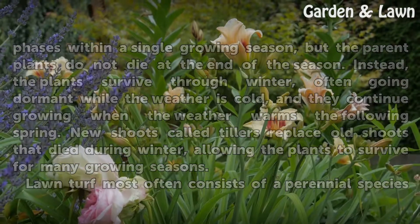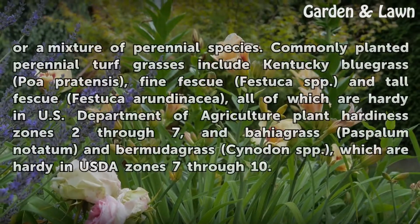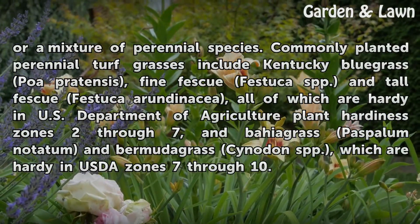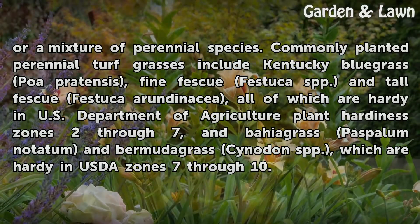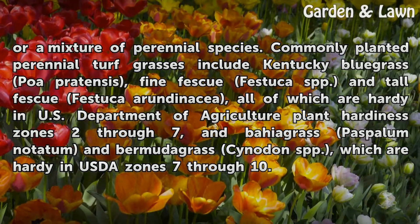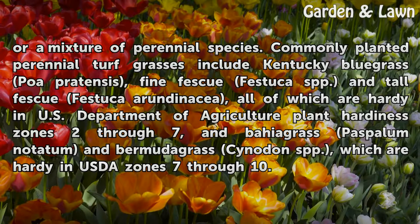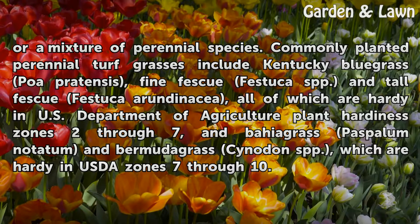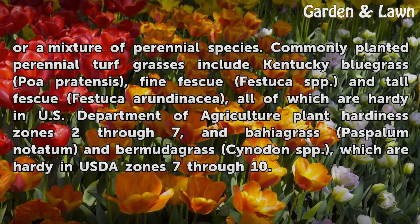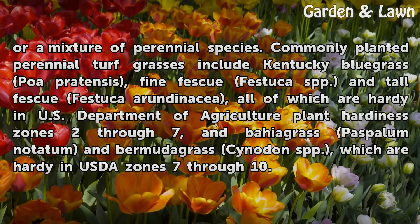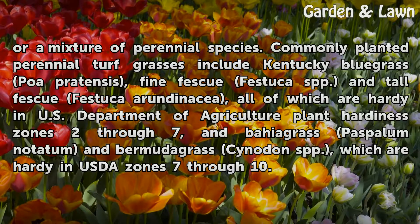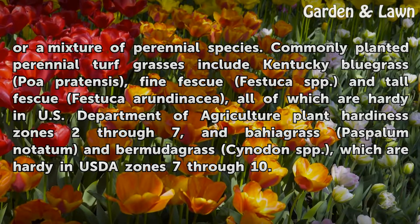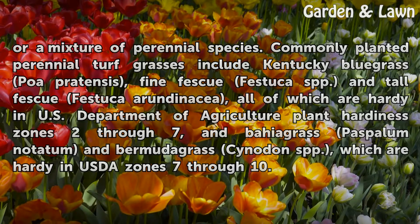Lawn turf most often consists of a perennial species or a mixture of perennial species. Commonly planted perennial turf grasses include Kentucky Bluegrass (Poa pratensis), Fine Fescue (Festuca spp.), and Tall Fescue (Festuca arundinacea), all of which are hardy in U.S. Department of Agriculture Plant Hardiness Zones 2 through 7, and Bahia Grass (Paspalum notatum) and Bermuda Grass (Cynodon spp.), which are hardy in USDA Zones 7 through 10.